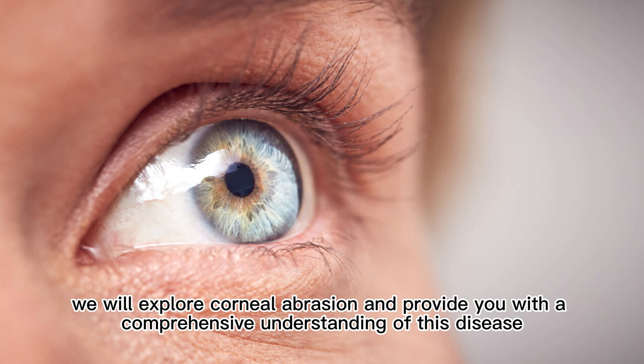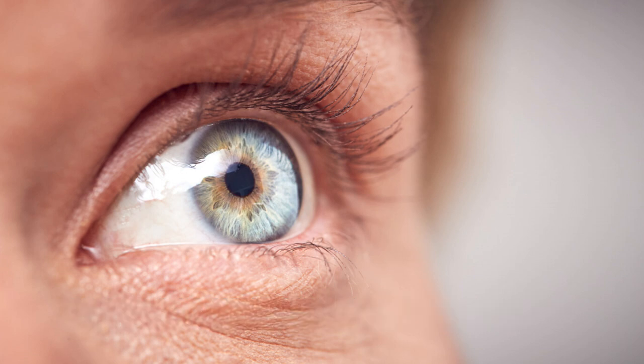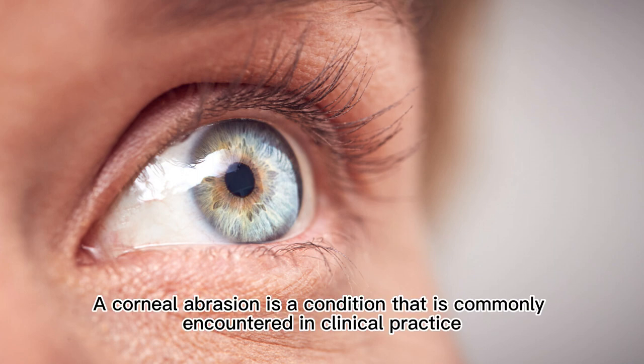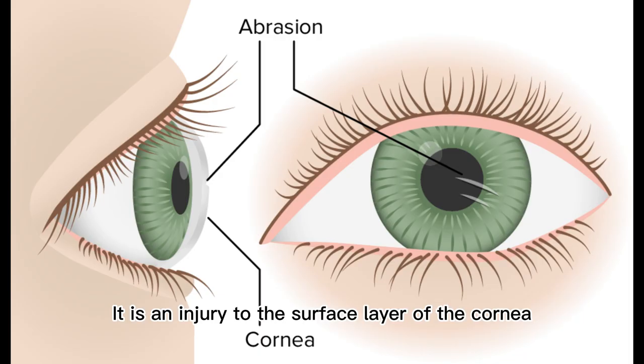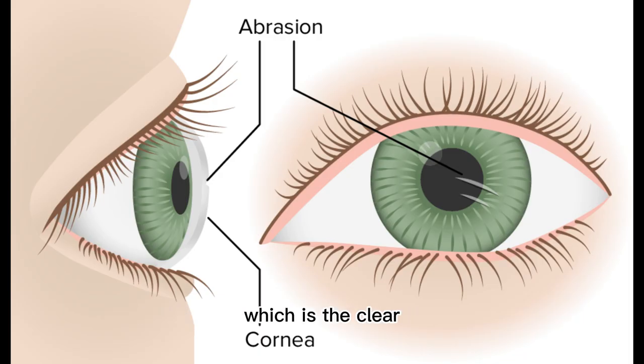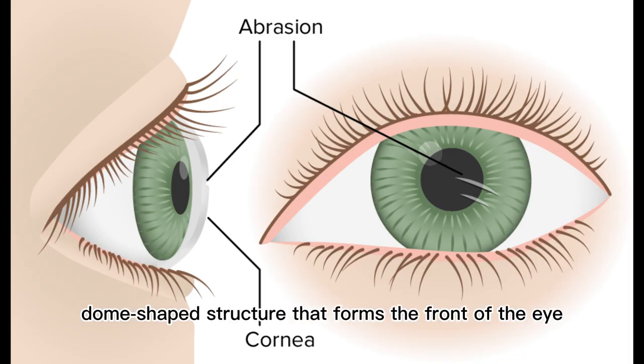In this video, we will explore corneal abrasion and provide you with a comprehensive understanding of this disease. A corneal abrasion is a condition that is commonly encountered in clinical practice. It is an injury to the surface layer of the cornea, which is the clear, dome-shaped structure that forms the front of the eye.